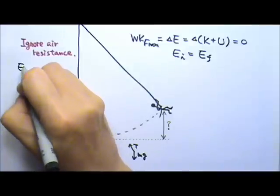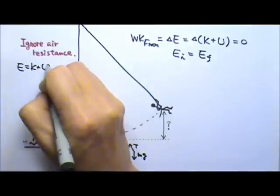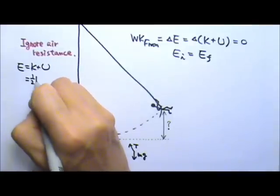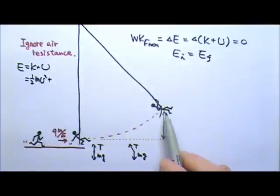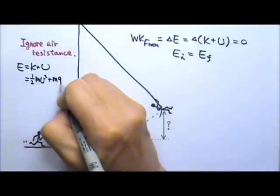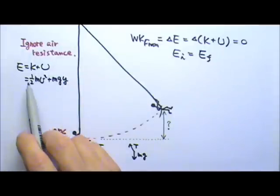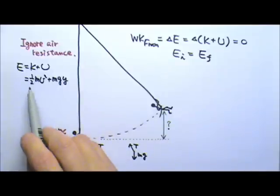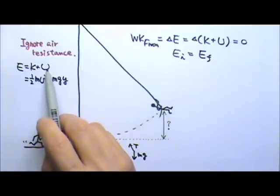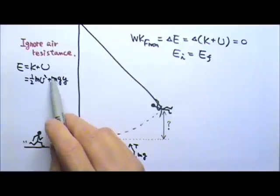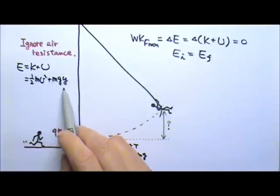And total mechanical energy is k plus u, which is one-half mv squared, and so far we just have this gravitational potential energy, so u is mgy, which means you have kinetic energy if there is a mass that is moving. You have gravitational potential energy if there is a mass that is not on the ground, either above ground or below ground.